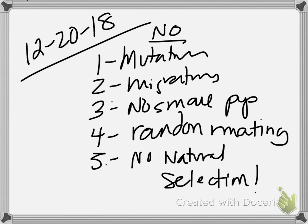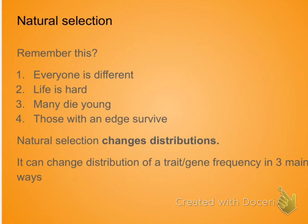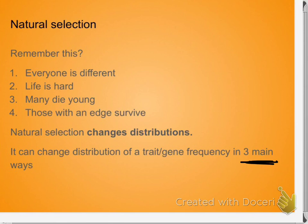What we want to look at is how natural selection pushes a population. To do that we first have to remember what it is. Natural selection changes gene frequency — it changes distributions. And what we're going to look at is how it changes distribution, because there are three ways that it changes distribution.